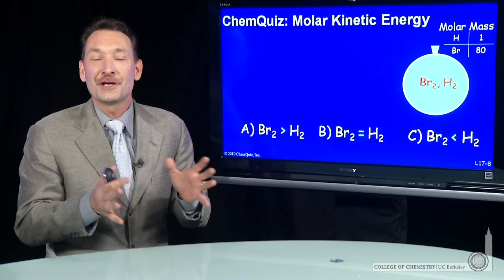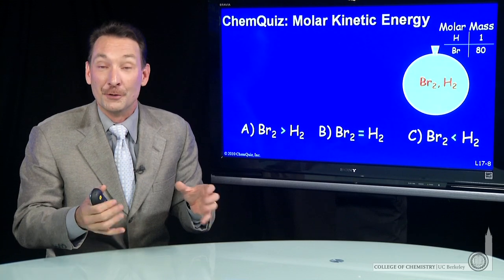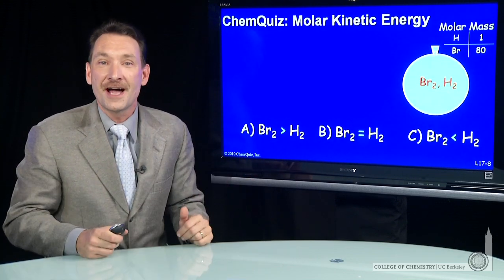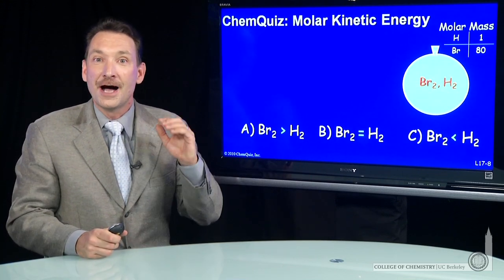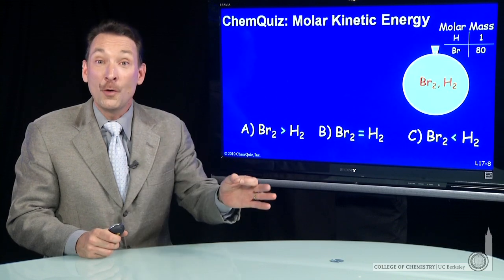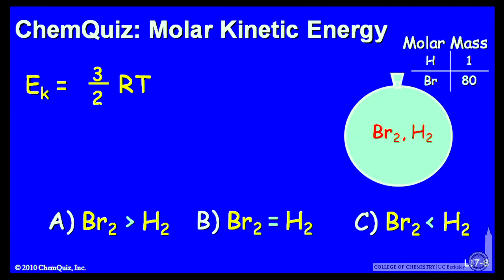We're talking about hydrogen and bromine gas mixed together in a balloon, one mole of each. Which has the higher kinetic energy? Well, a gas's kinetic energy depends only on the temperature. So both of these gases, even though there's a difference in mass, have the same kinetic energy.